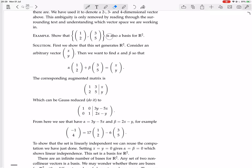Here's another example. Show that {(1,2), (3,5)} is also a basis for R². This will be a little bit more involved in actual calculation. We've got to show that this set generates R² and that it's linearly independent. First, we show that this set generates R². Consider an arbitrary vector (x,y). Then we want to find alpha and beta so that alpha times (1,2) plus beta times (3,5) equals (x,y).